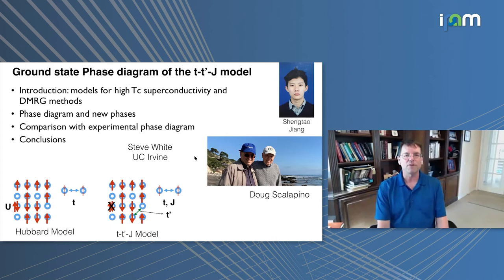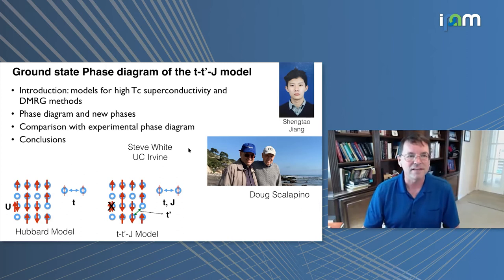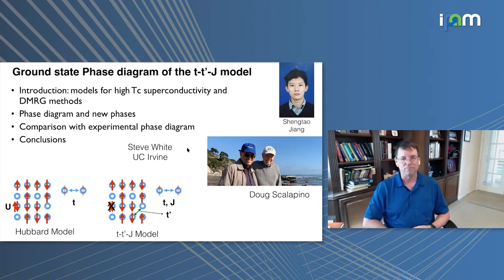So I want to talk about very recent results. These are going to appear in a preprint that we just finished last night, so they'll be posted sometime this week in the archive. The ground state phase diagram of the T-T prime J model. This is one of the models for high temperature superconductivity.